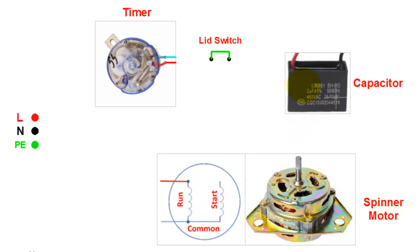Then we have a capacitor and a timer. Here I have also included the lid switch. You can also bypass this switch in order to run the spinner motor. First of all, connect the earth point with the body of the motor.